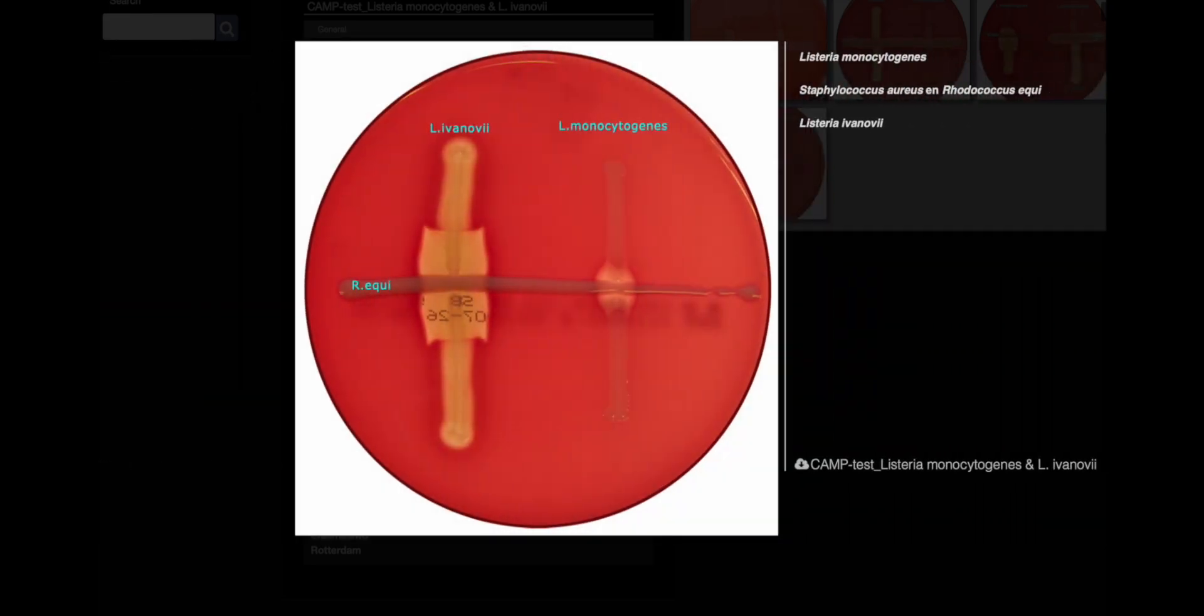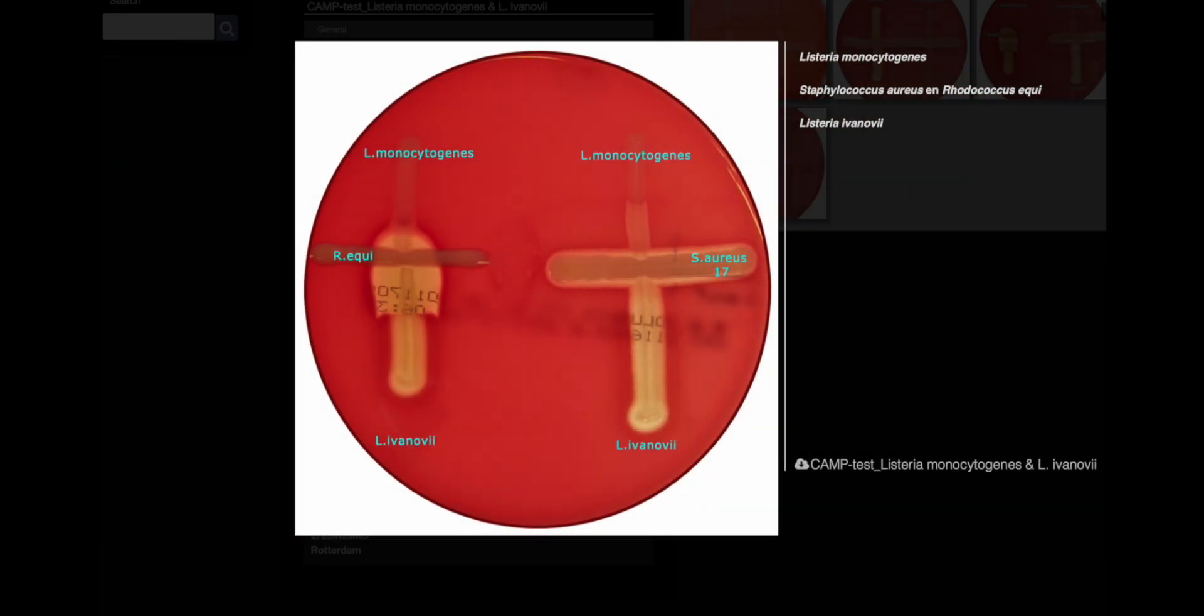Poem on CAMP. On blood agar stage, a bacterial play, CAMP test unfolds, Listeria's ballet. Staph aureus and Rhodococcus equi, parallel streaks, a microbial decree. Perpendicular dance, the Listeria's strain.